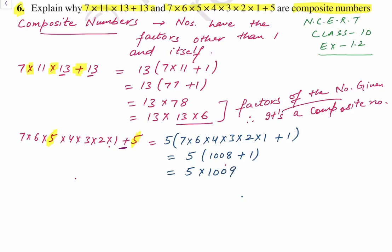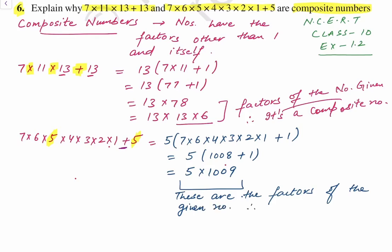So we multiply 5 by 1009. You can see that this number has 2 factors: 5 and 1009. Therefore, it's a composite number. We can write that these are composite numbers because their factors are other than 1 and itself — 'itself' meaning the same number given. Okay, that's it. Thank you.